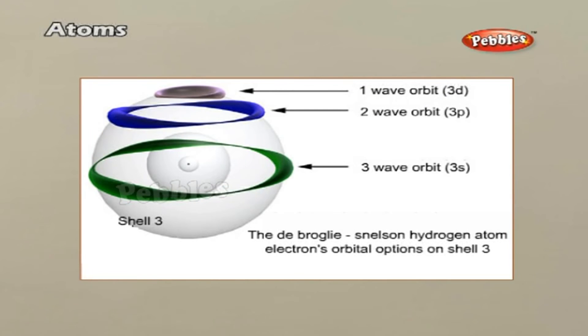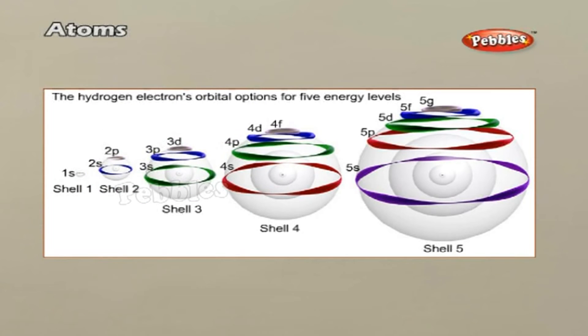For an electron moving in the nth circular orbit of radius rn, the total distance is the circumference of the orbit, that is 2πrn. Thus, 2πr equals nλ, that is, n equals 1, 2, 3, etc. The figure illustrates a standing particle wave on a circular orbit for n equals 4.